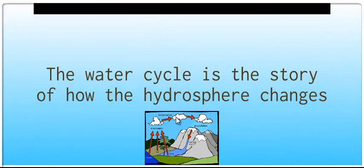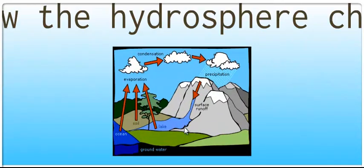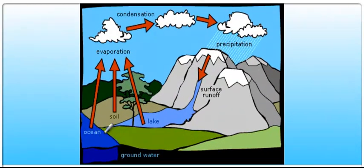Now the water cycle is also not just how water is transported, but how the hydrosphere changes. In oceans and lakes, it's liquid. As it evaporates, it is gas. As it condenses, it turns back into its liquid form.